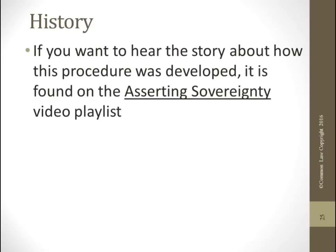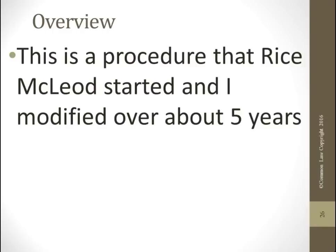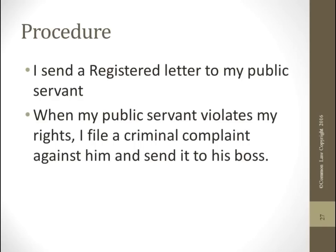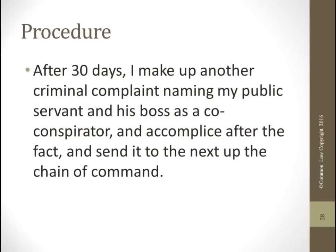If you want to hear the story about how this procedure was developed, it is found in the 'Asserting Sovereignty' video playlist on YouTube. This is a procedure that Rice McLeod started and I modified over about five years. I send a registered letter to my public official — always registered because it's kept under lock and key with a chain of custody and proof of service. When my public servant violates my rights, I file a criminal complaint and send it to his boss. After 30 days, I make up another criminal complaint naming my public servant and his boss as a co-conspirator. They have 30 days to respond — if they don't, he's an accomplice.